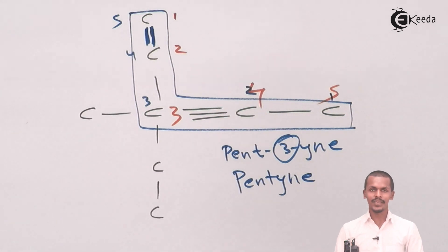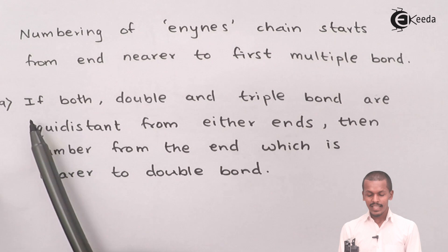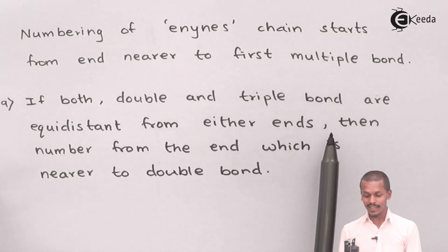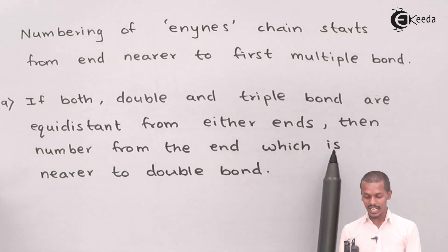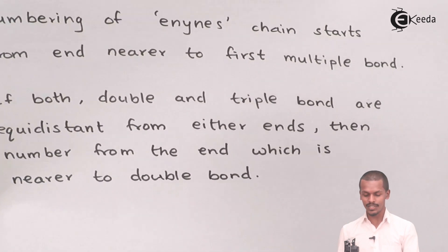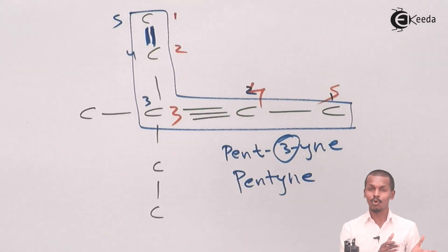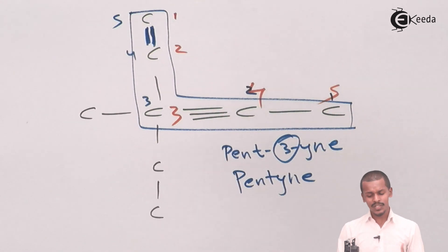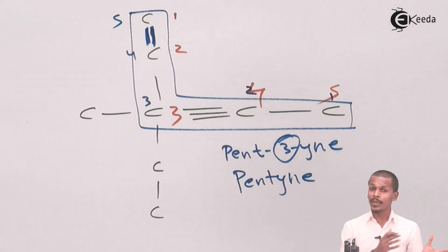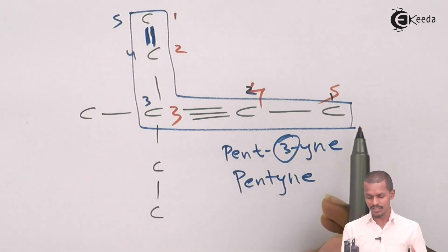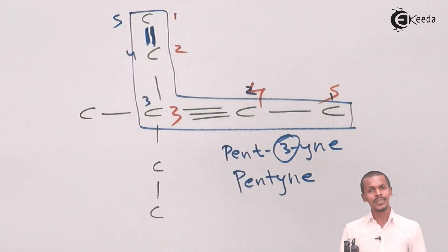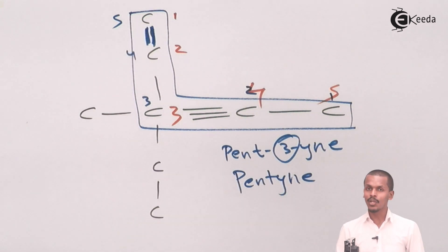We will also do examples in the next lecture. An important special case: if both the double bond and triple bond are equidistant from either end of the chain, then the numbering should be done from the end that is nearer to the double bond. So in such a case, numbering starts from the end giving the carbon-carbon double bond the lower number.